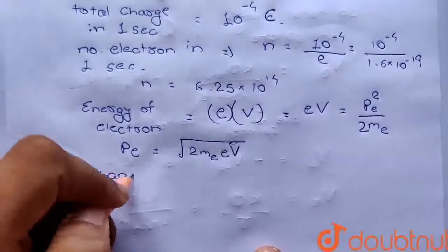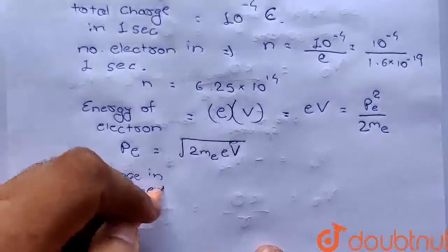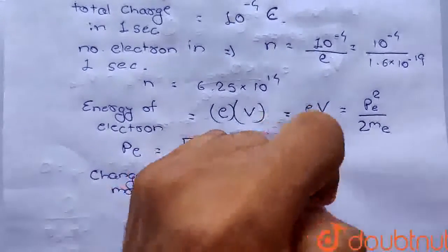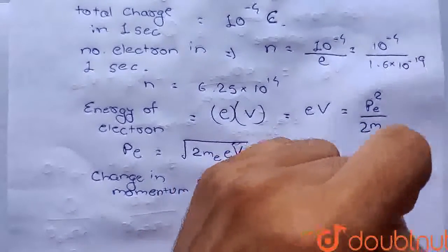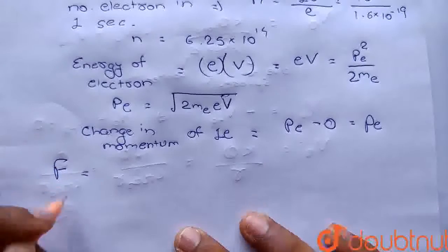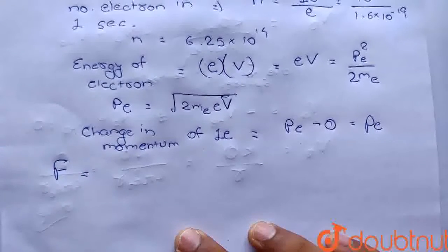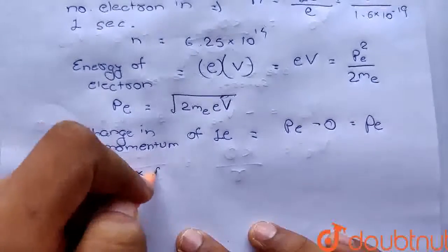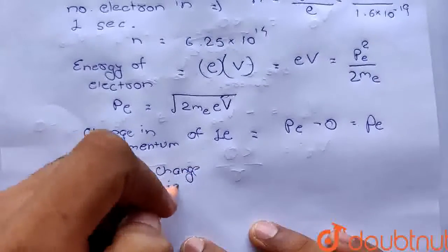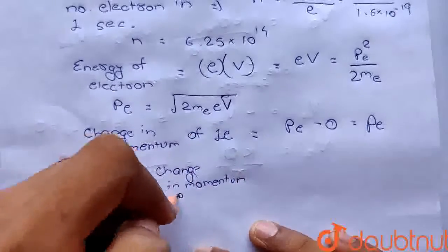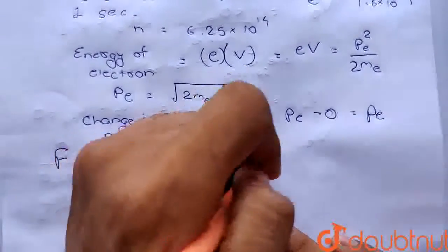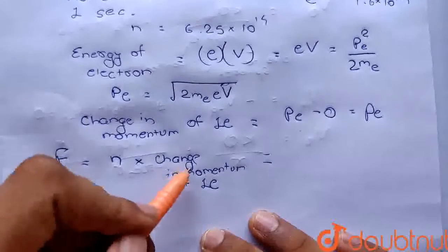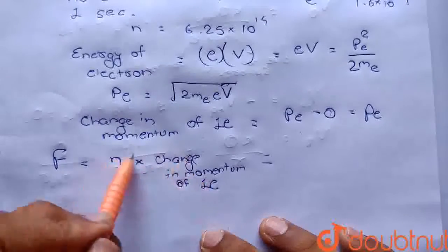Change in momentum of one electron कितना आ जाएगा? यह pe के बराबर होगा, क्योंकि finally electron rest पर आ जाता है तो final momentum 0 हो जाएगा। तो force की value = rate of change of total momentum = n into change in momentum of one electron। Here n is number of electrons per second and this is change in momentum of one electron, giving total change of momentum per second.